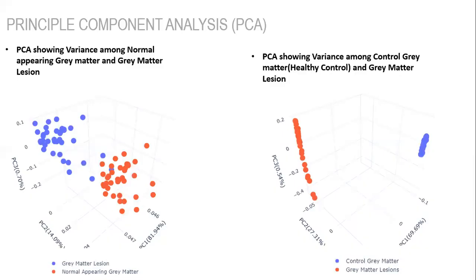Data was explored using principal component analysis, a dimensionality reduction technique that discerns variability between samples. PCA was performed for exploratory analysis between all three conditions, between gray matter lesions and normal appearing gray matter, and between gray matter lesions and control gray matter. On the left you can see PCA between normal appearing gray matter and gray matter lesions, and on the right between control gray matter and gray matter lesions. The variation between gray matter lesions and healthy samples was substantial, and so I downstream my analysis with this group.